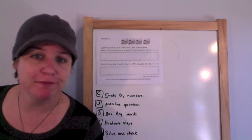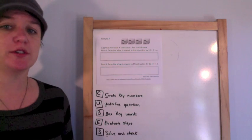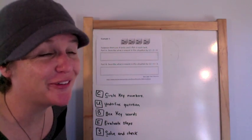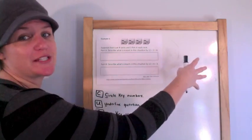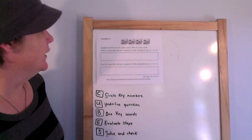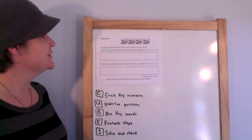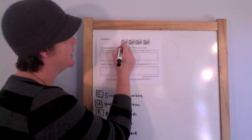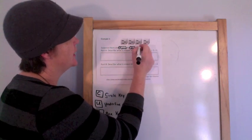We're on example number five. It's a two part question and it is open response. Again, I want to point out only your answer goes inside the boxes. All of your work has to go outside. So somewhere else, get notebook paper or something. Alright. Oh, we got some fish. Suppose there are four tanks, one, two, three, four tanks and three fish in each tank.